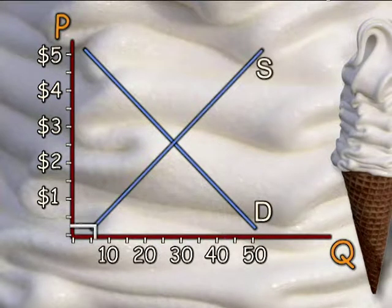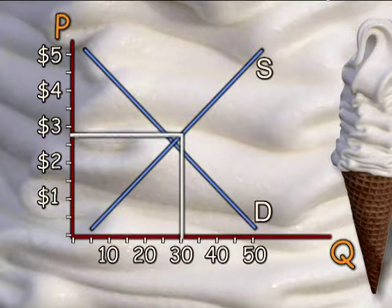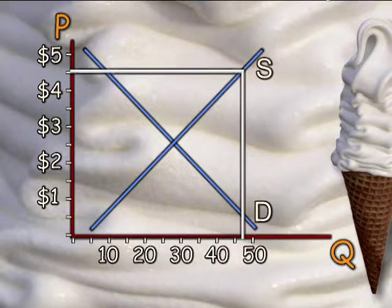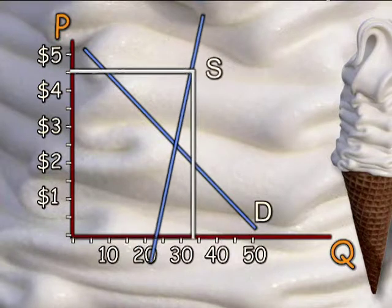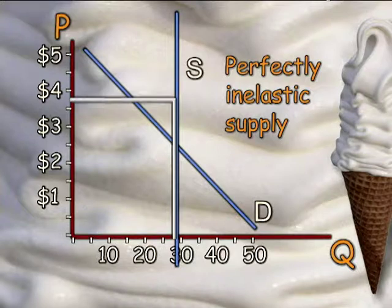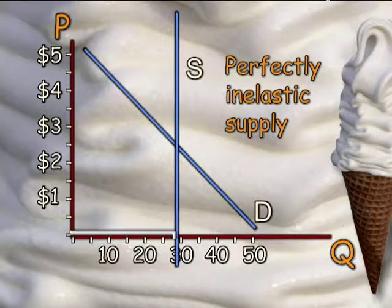The supply curve also slopes because of suppliers' responsiveness to price, with quantity supplied increasing as the price rises. Suppliers too show some price elasticity. If they didn't, the supply schedule would be perfectly vertical — a price elasticity of zero — meaning the same quantity of ice cream supplied no matter what the price.